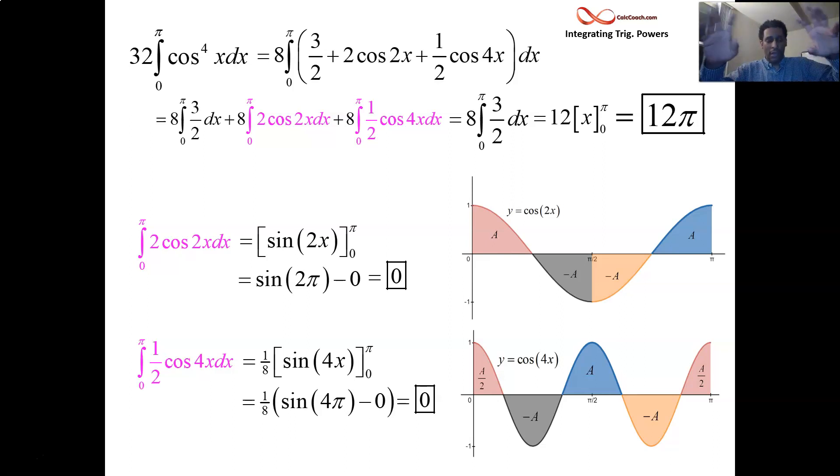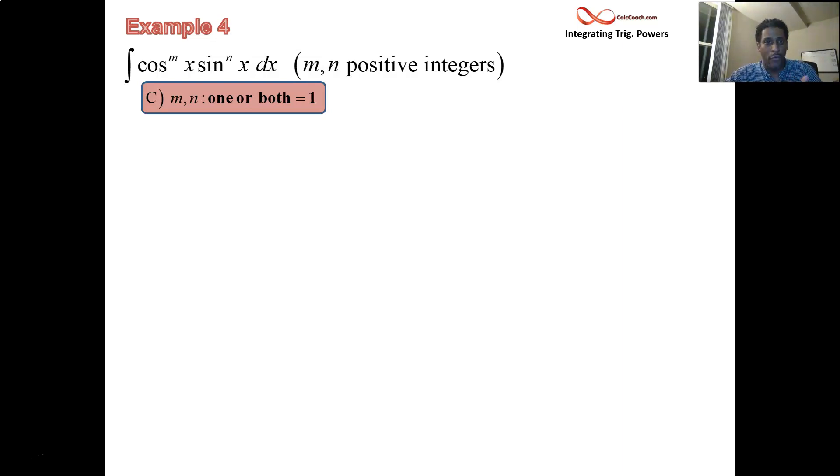So there were three different types. Odd power present, and basically the absence of an odd power. Only even power is present. There was a third type at the bottom of the slide that I was introducing at first, where I said there's really an easier way if one of these guys have a power of 1. Let's go ahead and do that now. We can do it quickly. What if one of them, or both of them, have a power of 1? We'll call this example 4.